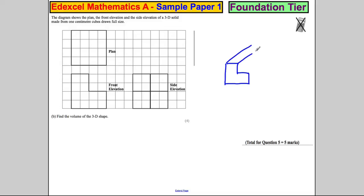And the plan is what you would see from the top. So it must be something like that, because from the top, that would just look like a flat surface there. And from this view here, that would look like a flat surface there.